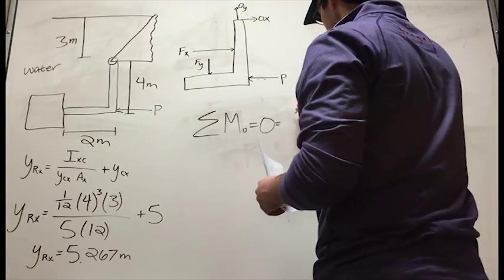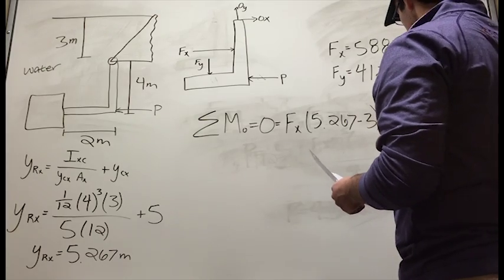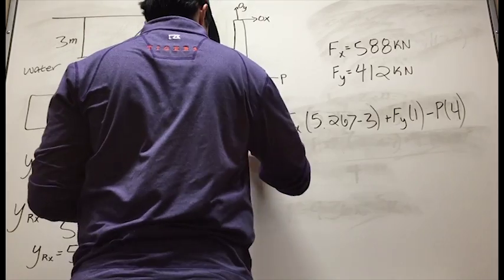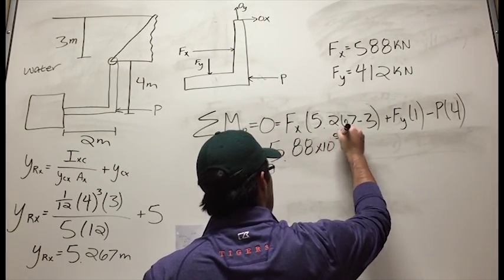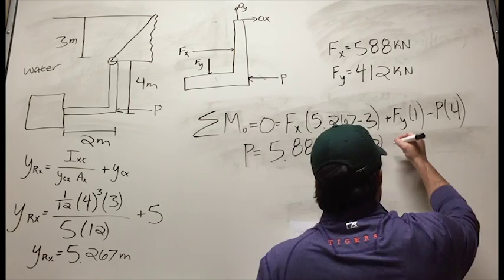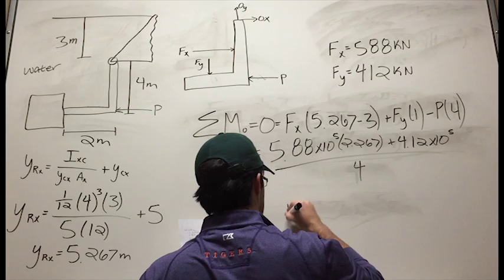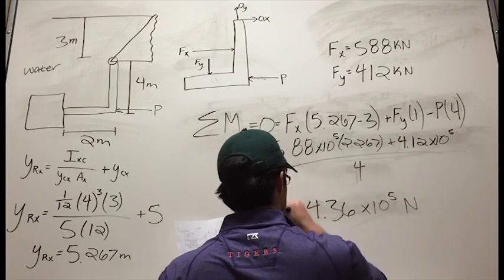The final step in finding P is using the free-body diagram to sum the moments about O. By doing this, we can also ignore the reaction forces at O. After plugging in the calculated values, we find that P is equal to 4.36 times 10 to the 5th newtons.